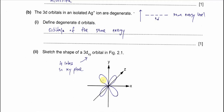For part d(i), the 3d orbitals in an isolated silver ion are degenerate. Define degenerate: degenerate orbitals means the orbitals are at the same energy level. There are five 3d orbitals and these five orbitals must all be at the same energy level for us to say they are degenerate. When they form a complex ion with ligands, that changes — but before forming the complex ion, they are degenerate, meaning they have the same energy level.